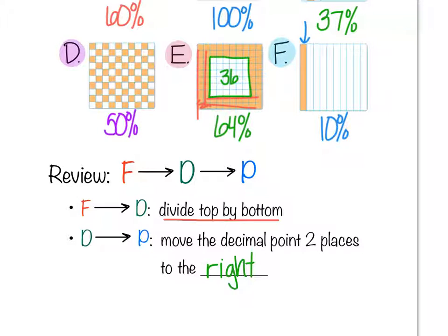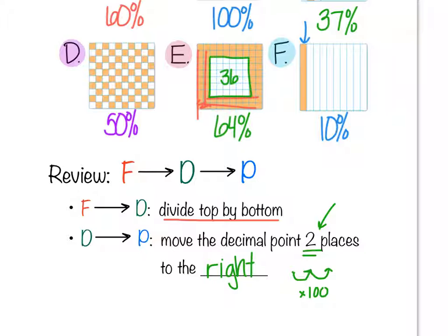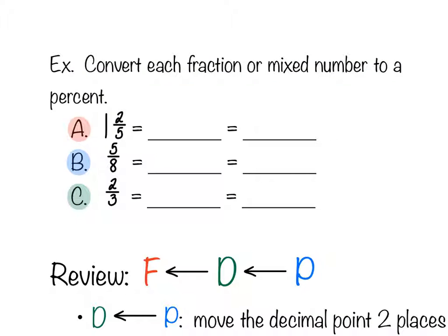Percents are out of 100, and the prefix 'deca' like decade means 10. Every time you move the decimal one spot it's like multiplying by 10, so moving it two spots is multiplying by 10 times 10, which is 100. That's why we move it two places to the right — always two places, not necessarily to the end of the number.